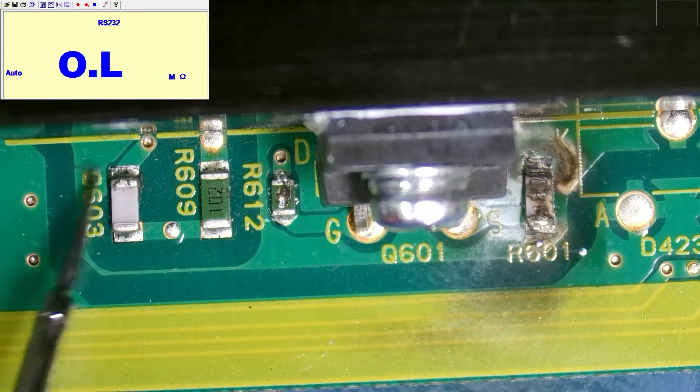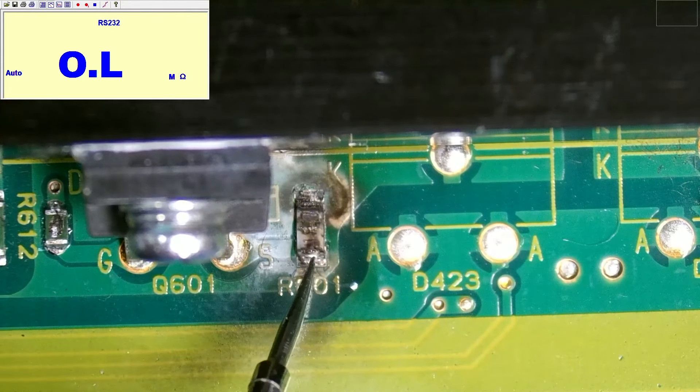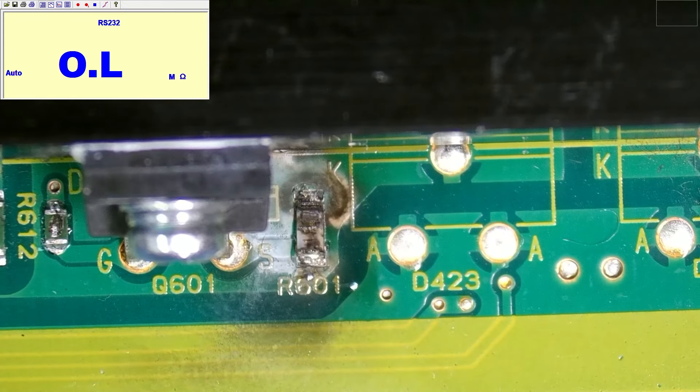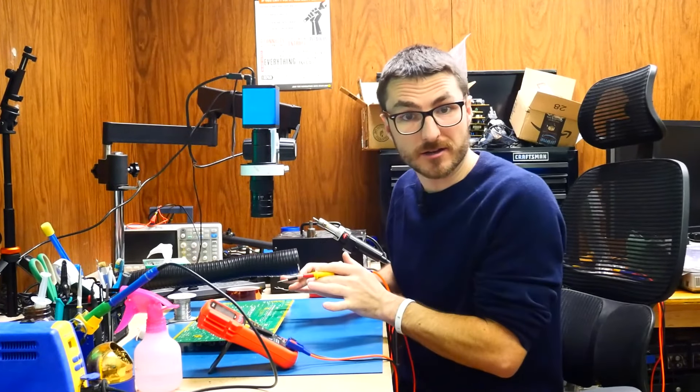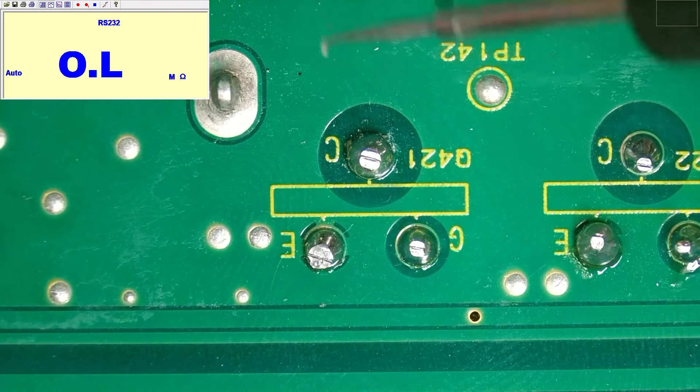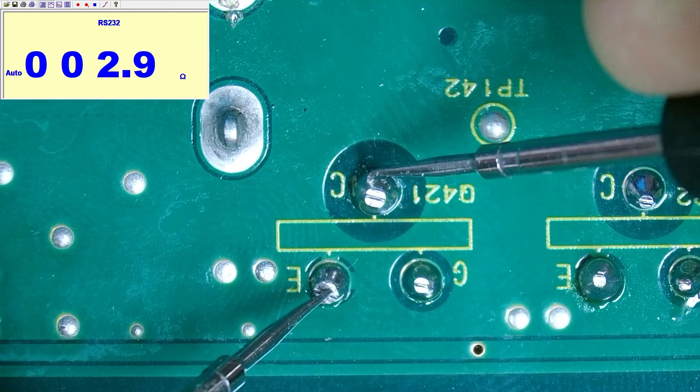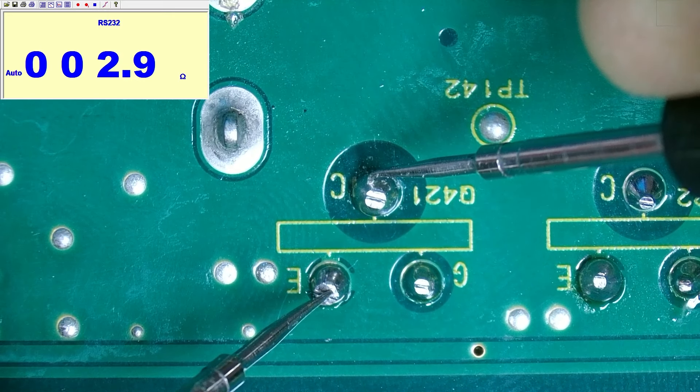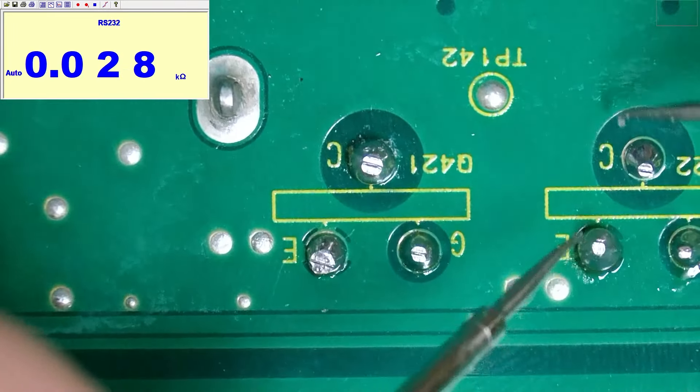This resistor over here looks pretty rough. We're obviously going to have to replace that. So taking another look at the back of the board, we can see this one has had new solder. So this is one of the components that was replaced in the past.